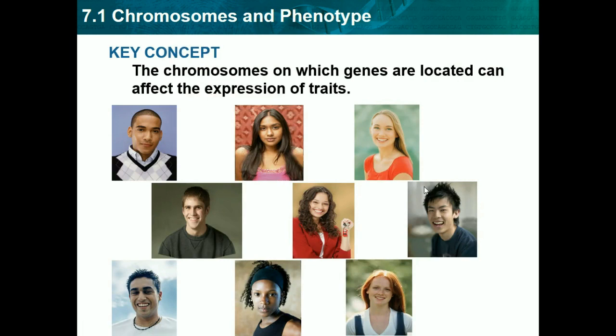Our key concept is that the chromosomes on which genes are located can affect the expression of traits. Chromosomes are basically the manual for how our cells run their lives, and genes located on the chromosomes express our traits. The genes in our DNA express how everybody looks and what makes us all different.